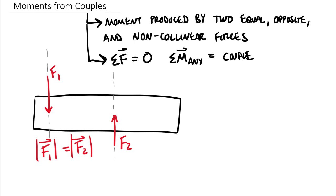Fundamentally it doesn't matter what point we pick. We could pick a point on F2, a point along the line of action of F1, a point on this end, or even a point way up here — and we're going to end up with the exact same sum of moments. That's one of the really beautiful things about these couples. The only terms that make a difference in the value of this couple are the magnitude of those forces and how far they're separated, which I'll call r.